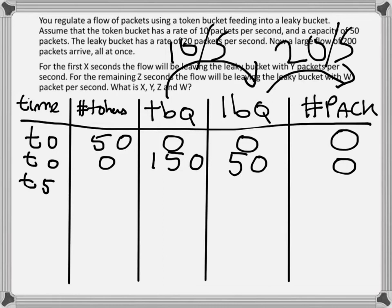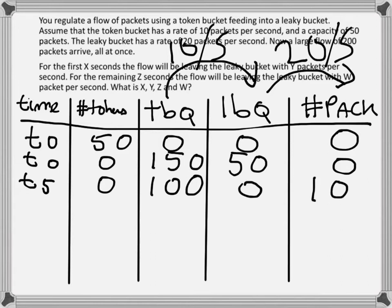At the 5-second mark: there are still no tokens. In the token bucket queue, since tokens were arriving at 10 per second, after 5 seconds I will have received 50 tokens, so there will be 100 packets left in the queue. In the leaky bucket, packets leave at 20 per second, so after 5 seconds 100 packets could leave — there were 50 in the queue and 50 arriving from the token bucket, so the leaky bucket queue will be empty, and in total 100 packets will have been processed.